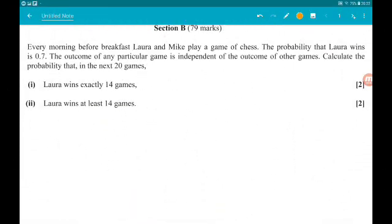Okay, question 8, got a nice one here. Two 2-markers. Each morning before breakfast, Laura and Mike play a game of chess. Fun fact, I'm rubbish at chess and it really annoys me. The probability that Laura wins is 0.7. The outcome of any particular game is independent of the outcome of any other game.